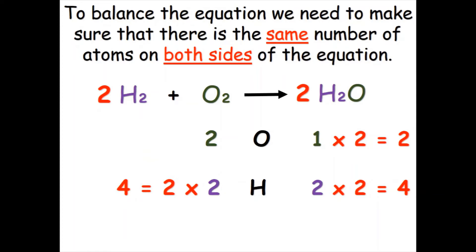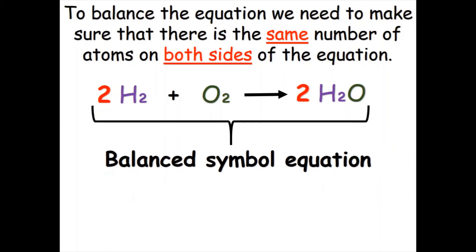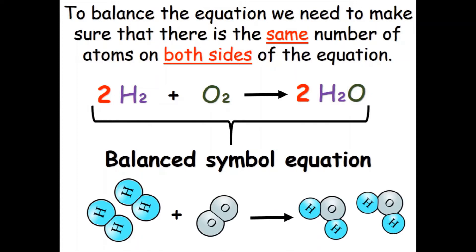Now we have four hydrogen atoms on both sides and a balanced symbol equation. Looking at the atom counts: four hydrogen atoms on the left, four on the right; two oxygen atoms on the left, two on the right. This is now a balanced equation for this reaction.